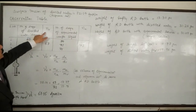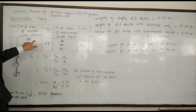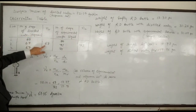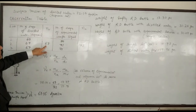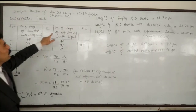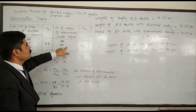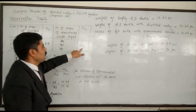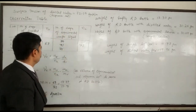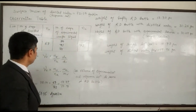The number of drops for the reference solution, that is distilled water, is 67. The number of drops for the experimental sample solution is 71.